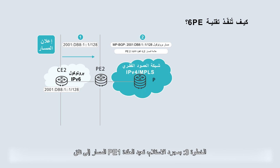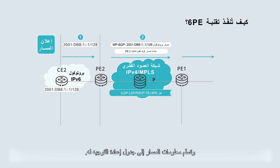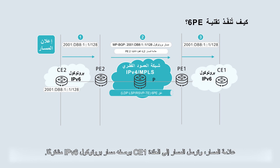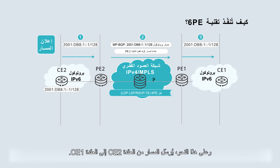Step 3: upon receipt, PE1 recurses the route to a tunnel and delivers route information to its forwarding table. PE1 then changes the next hop of the route to itself, removes the route label, and sends the route to CE1 as a common IPv6 route. This way, the route is sent from CE2 to CE1.